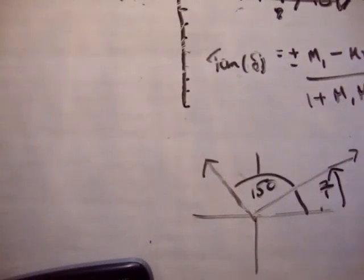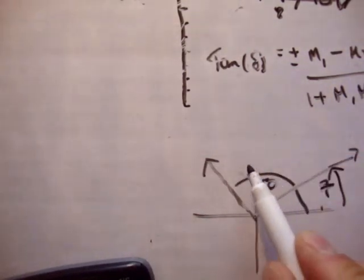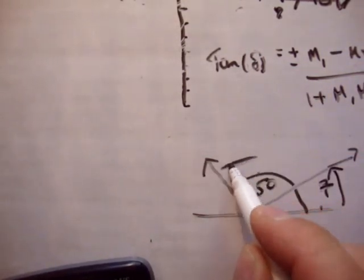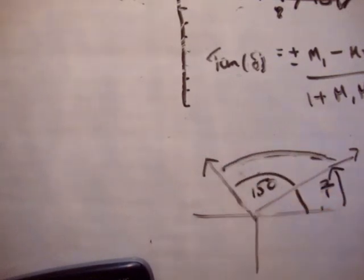I hope that makes sense to you like that. So what we're trying to do is work out the angle, and I don't have another color, so we're trying to work out this angle here between the two vectors themselves.